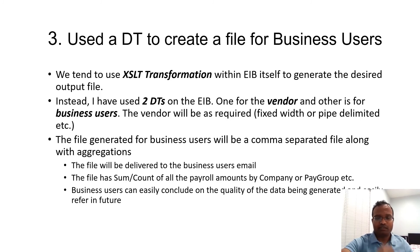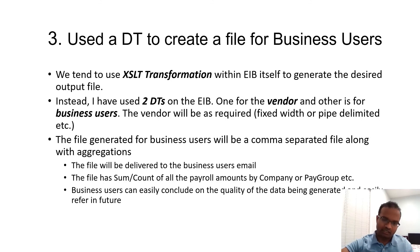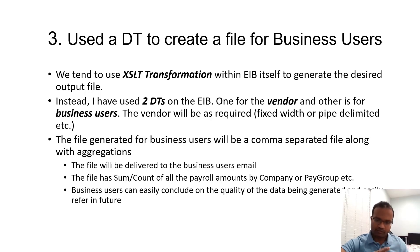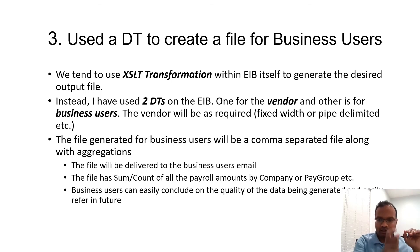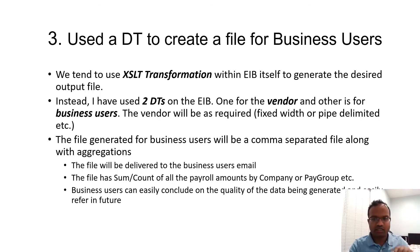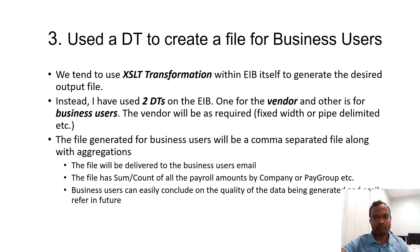I used two document transformations: the first creates the file for the vendor, and the second creates a CSV file for business users that can be opened in Excel — very intuitive. Additionally, I added aggregations to the business user file: summing payroll information by company, by pay group, or by job code, plus counts wherever required. For example, if there are four companies, the sums and counts appear first — maybe 50 to 60 rows — followed by the full employee data. This was hugely appreciated by the business and is very helpful on an ongoing basis.